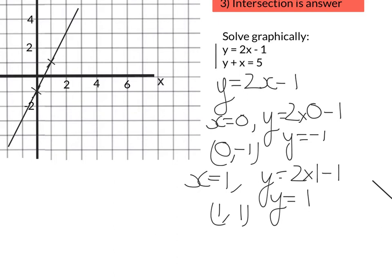Now I need to do the same for the other line, which was y plus x equals 5. I'm going to make x equals 0 and see what my y value would be. So y plus 0 equals 5, meaning y equals 5. So (0, 5) is a point. Let's put that on the graph, right at the top there.